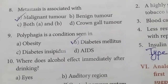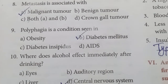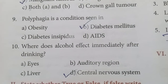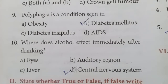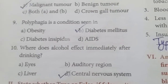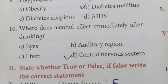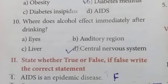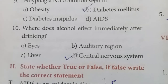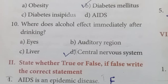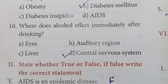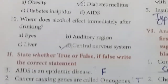Metastasis is associated with malignant tumour. Polyphagia is a condition seen in diabetes mellitus — 'poly' means numerous, 'phagia' refers to eating, and in diabetes mellitus there is excessive hunger and thirst. Alcohol immediately affects the central nervous system after drinking; because of this, the alcoholic person cannot walk steadily — that is the reason for unsteady walking.